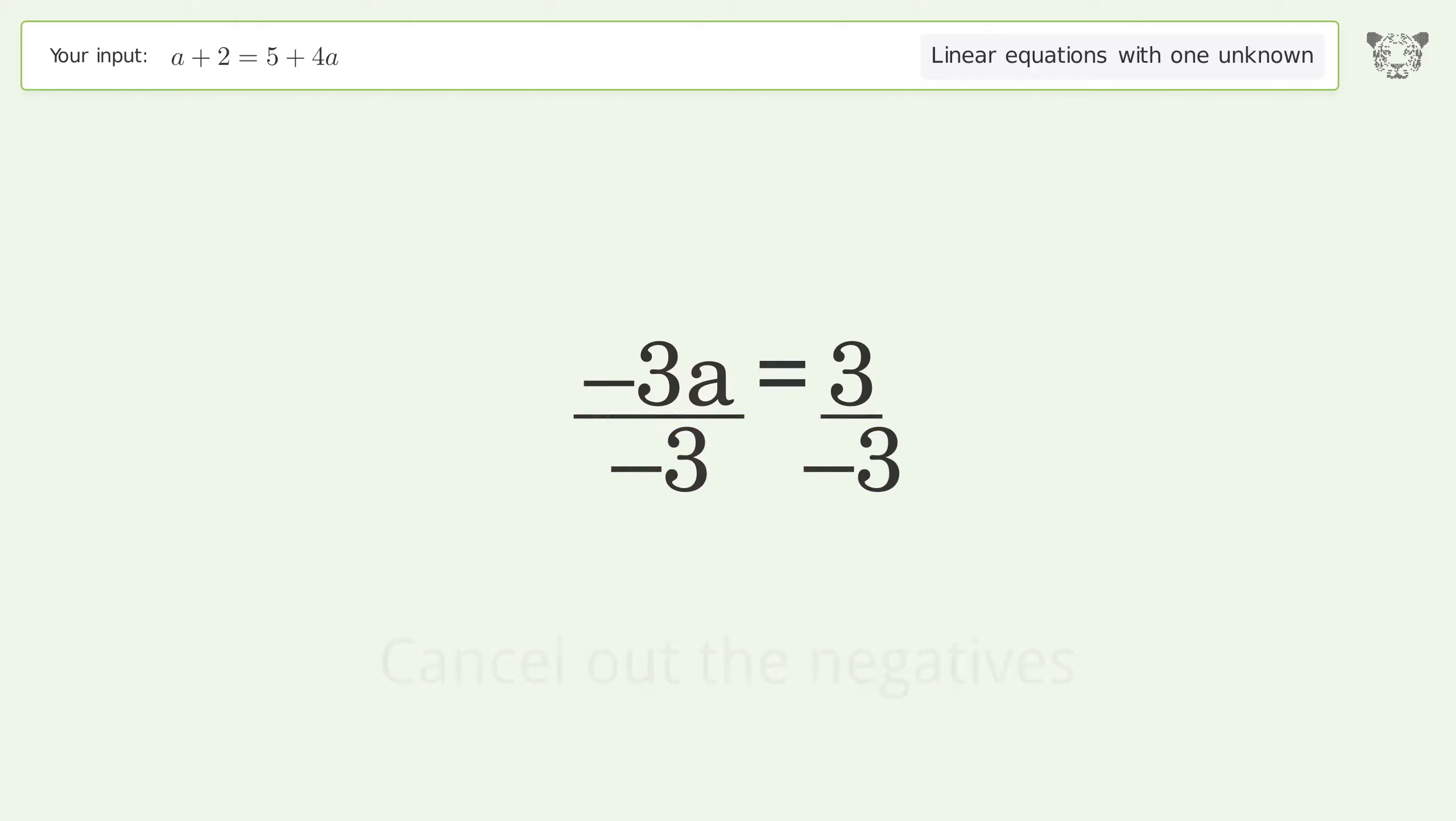Isolate the a. Divide both sides by negative 3. Cancel out the negatives.